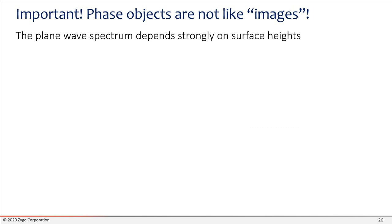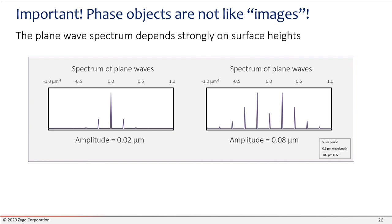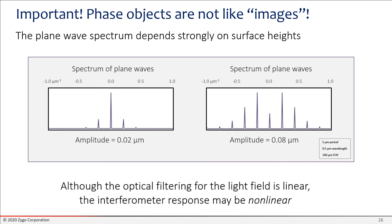It's quite important to realize that phase objects, that is, like topography objects that create this phase shift, are not like images. The plane wave spectrum strongly depends on the surface height. So here's an example where you have a sinusoid. It's the same period sinusoid in both of these graphs. The difference is the amplitude of the sinusoidal topography feature, and you can see for a larger amplitude you get many more diffraction orders. And all of these diffraction orders have to be captured by that partially coherent transfer function to get good linear results. So even though the transfer function for the light field is linear for a wide variety of circumstances, the interferometer response may be non-linear. And that's one of the reasons why you want to do modeling is to find out when it might be non-linear.